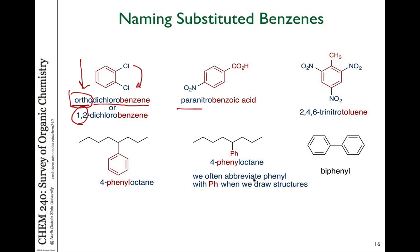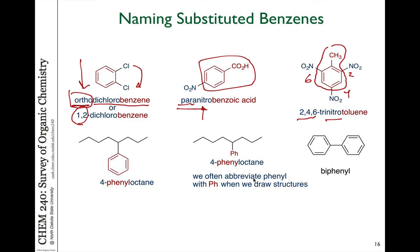For example, para-nitrobenzoic acid: the parent includes the CO2H, and the nitro group is in the 4 position, or in the para position relative to the acid group. With toluene as the parent molecule, positions 2, 4, and 6 are the locations of the nitro groups, so it's 2,4,6-trinitrotoluene — more commonly known as TNT, an explosive compound.